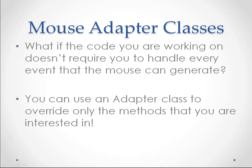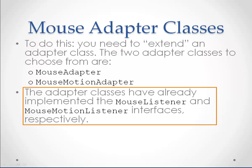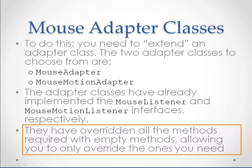So we'll now talk about the Mouse Adapter classes. What if the code that you're working on does not require you to handle every event that the mouse can generate? In this case, you can use an Adapter class to override only the methods that you are interested in. To do this, you need to extend an Adapter class. The two Adapter classes to choose from are Mouse Adapter and Mouse Motion Adapter. These Adapter classes have already implemented the Mouse Listener and Mouse Motion Listener interfaces respectively, meaning they have already overridden all the required methods with empty methods, allowing you to only override the methods that you need.